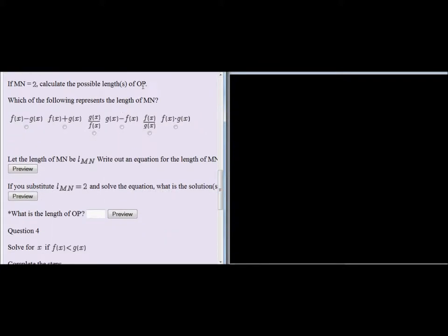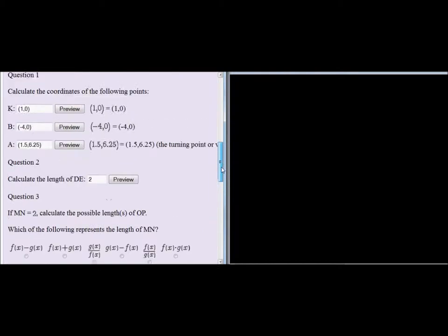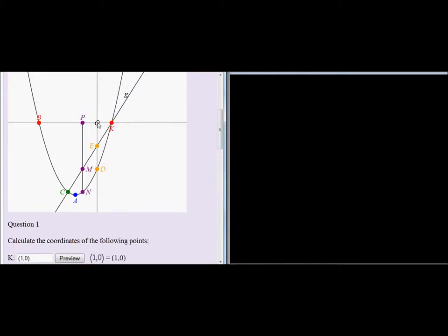Where is OP? OP is that distance. So what they've given me is this distance and I must calculate the possible length of that distance. So actually what I'm trying to find out is what is the x-coordinate of M or N? That will give me the x-coordinate of P and therefore the distance that I need there.